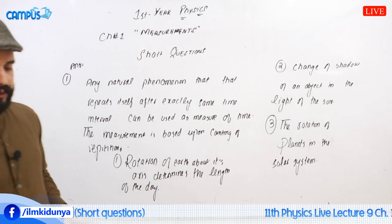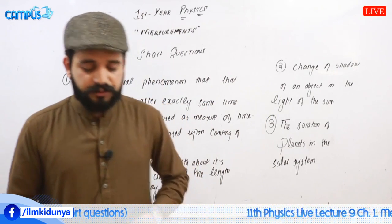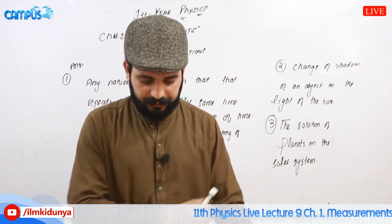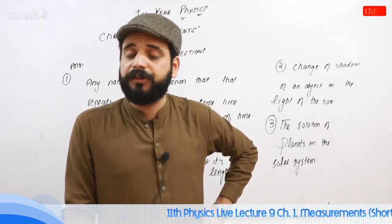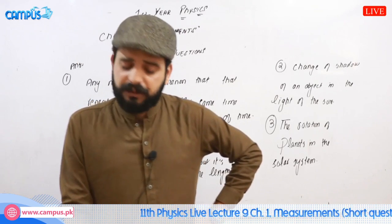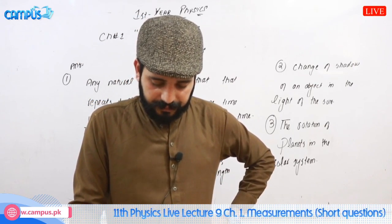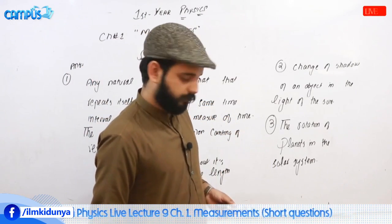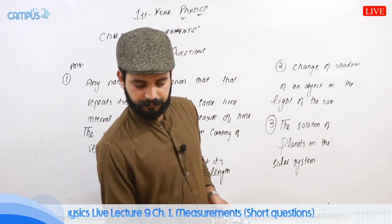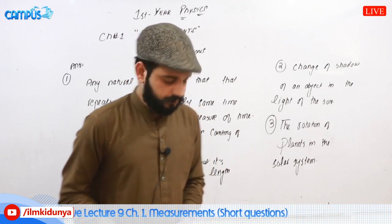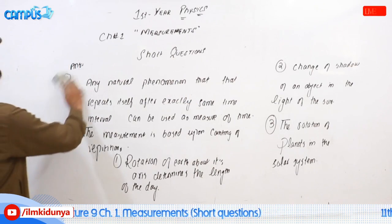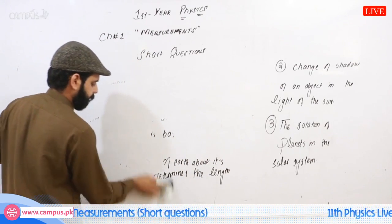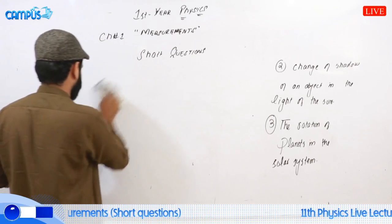Now we have to tell some drawbacks about the use of period as the time standard. The time period of the simple pendulum depends upon its length, where T is equal to 2π times the square root of l over g.